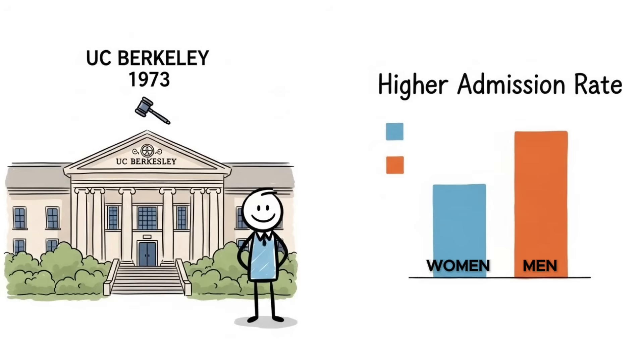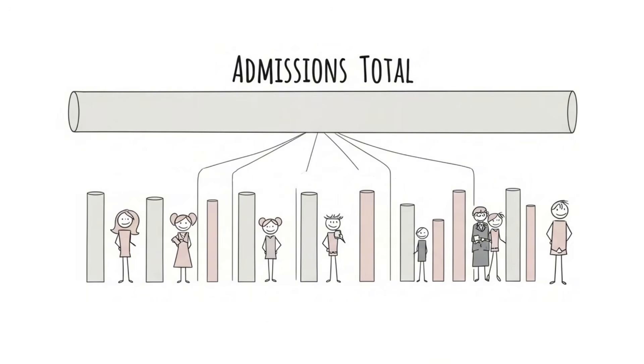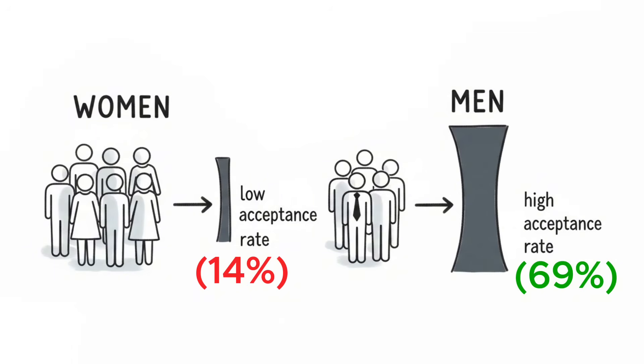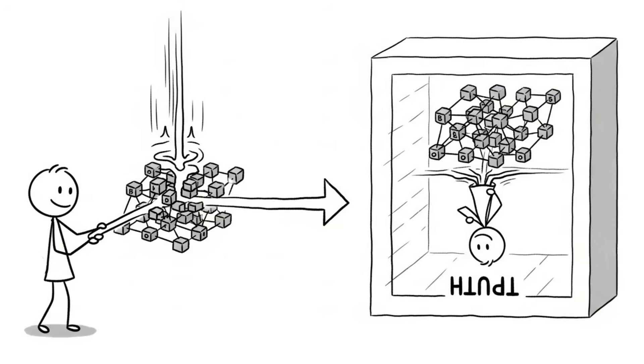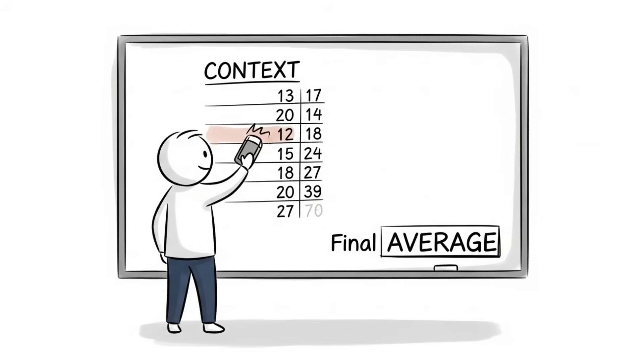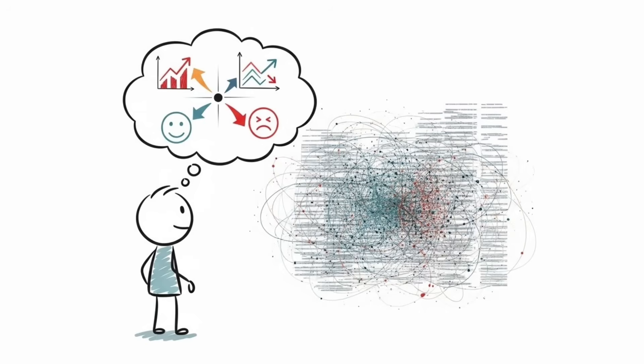UC Berkeley got sued in 1973 for gender discrimination because overall admission rates favored men, but breaking down data by department showed most biased toward admitting women. The paradox occurred because women apply to competitive departments with lower acceptance rates overall while men apply to easier ones. Aggregating without accounting for structure flips the truth. Averages lie when context gets erased. One data set tells two opposite stories depending on how you slice it, and both can be mathematically correct.